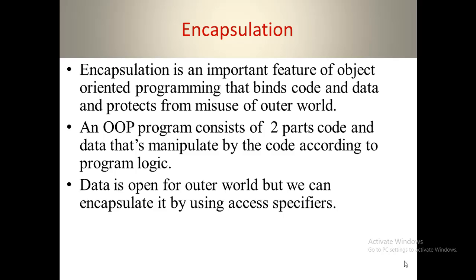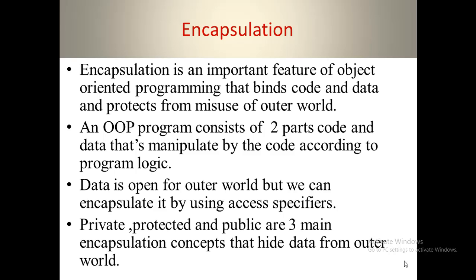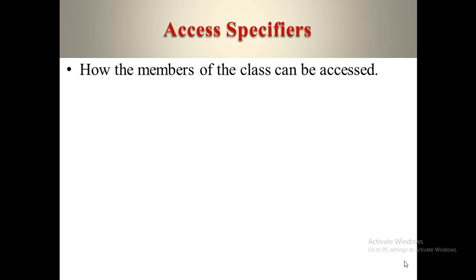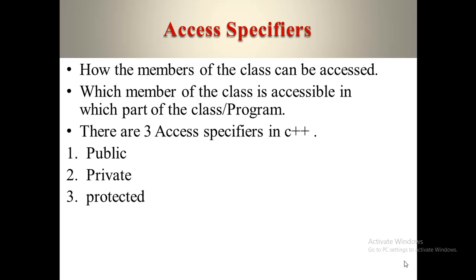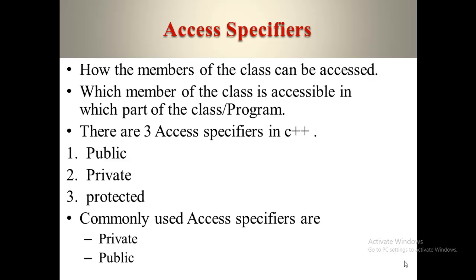Data is open to the outer world, but we can encapsulate it by using access specifiers. Private, protected, and public are three main encapsulation concepts that hide data from the outer world and prevent misuse. Basically, there are three main access specifiers in C++: public, private, and protected. But the main ones are public and private.